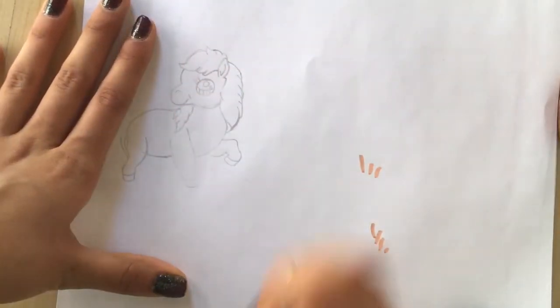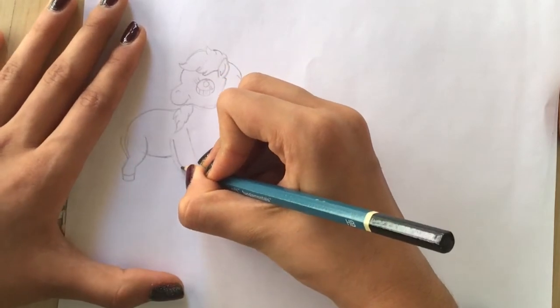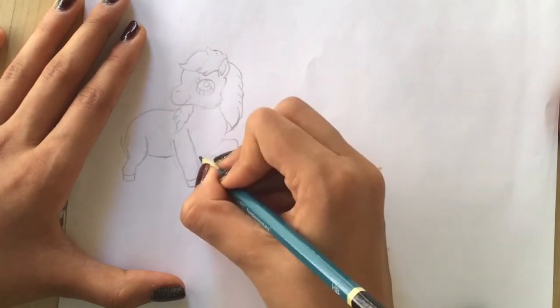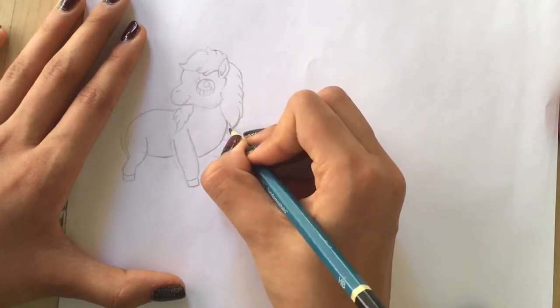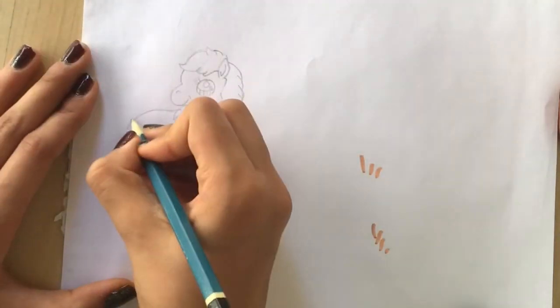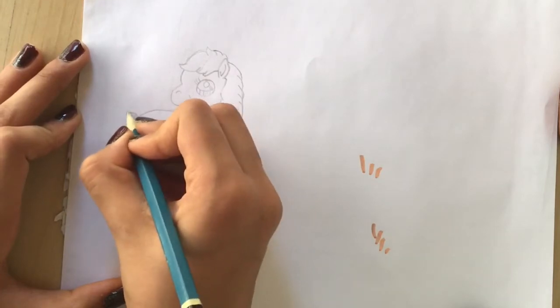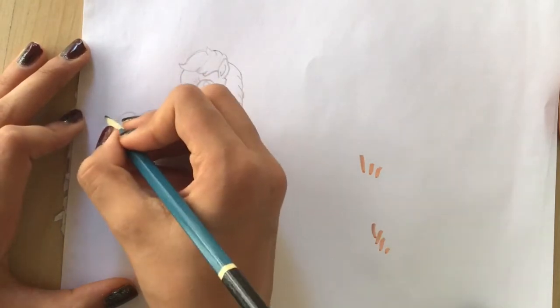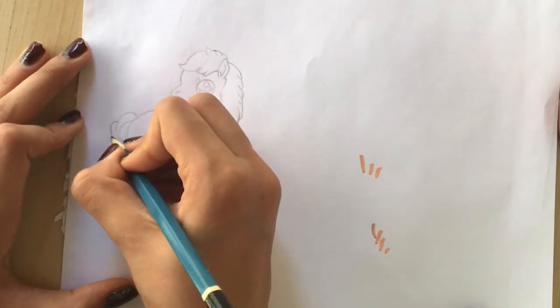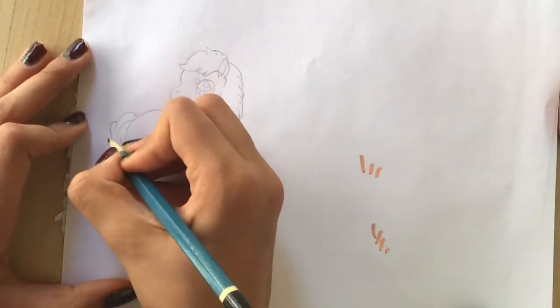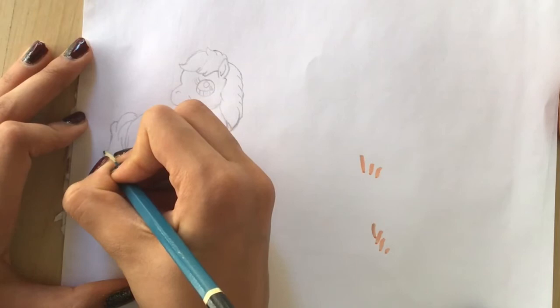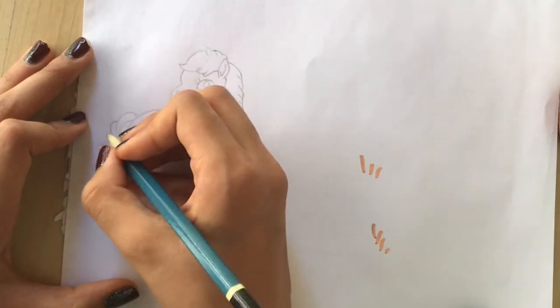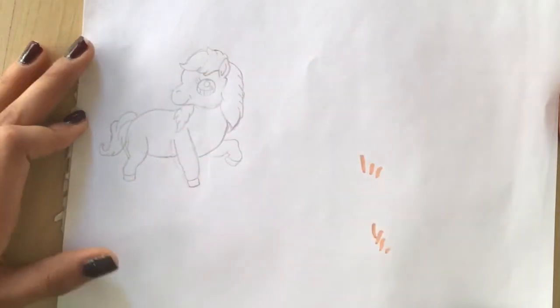And now the tail. Make a wavy line down. Another line here, third one here, and then going down to create a tip. And a curve, and another line, and finally the end.